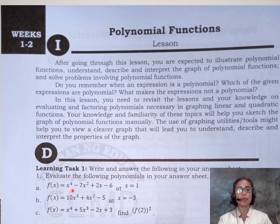Evaluate the following polynomials in your answer sheet. Letter A: f(x) = x^4 - 7x^2 + 2x - 6 at x = 1. Letter B: f(x) = 10x^3 + 4x^2 - 5 at x = -3. And letter C: f(x) = x^4 + 5x^3 - 2x + 3, find f(2)^2.